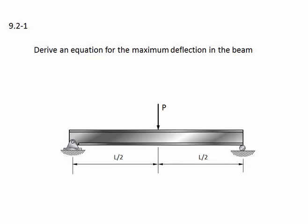Problem 9.2-1. Derive an equation for the maximum deflection in the beam. Here's the beam — it's simply supported with a pin on one end, a roller on the other, and a point load directly in the middle. There are no numbers; this is all symbolic. Let's solve this problem using deflection by integration.